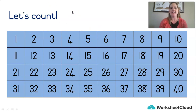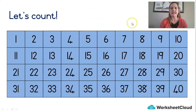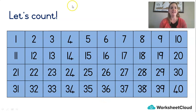Let's count in fives. Let's start at number 5: 5, 10, 15, 20, 25, 30, 35, 40. Very good.